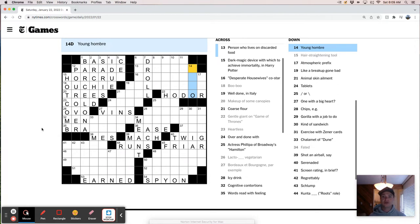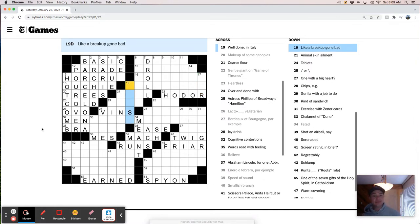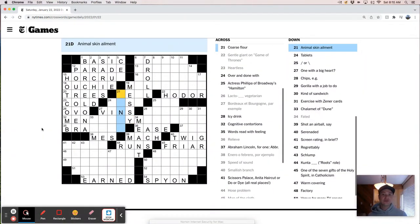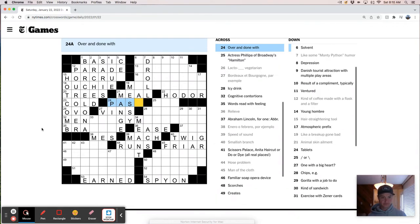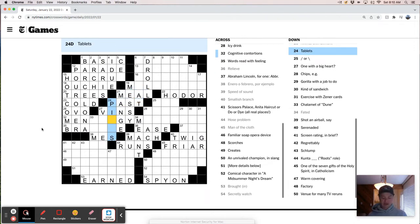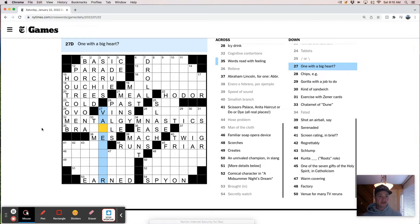Ventured. Young hombre. Is either an hijo or a niño, right? Atmospheric prefix. Like a breakup gone bad is messy. Animal skin ailment. Animal skin ailment. This is meal, right? Animal skin ailment. Oh, mange. Over and done with. Past. Tablets or pills. Tablets or pills. This is mental gymnastics. Boom. Those are both slashes. One with a big heart. Heart. Heart. Where'd you have a feeling is braille. That's a good clue. One with a big heart.